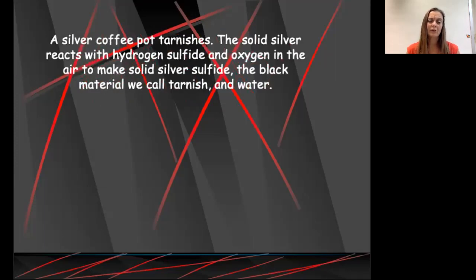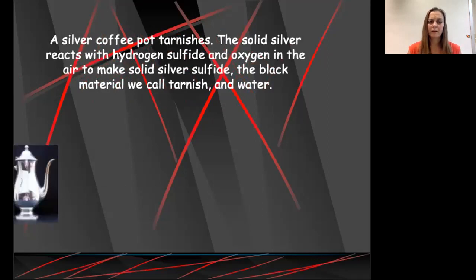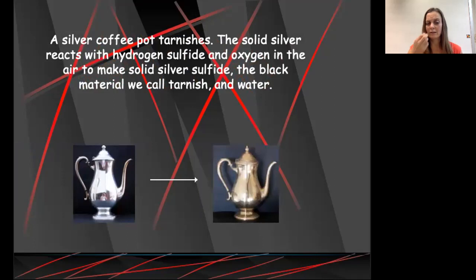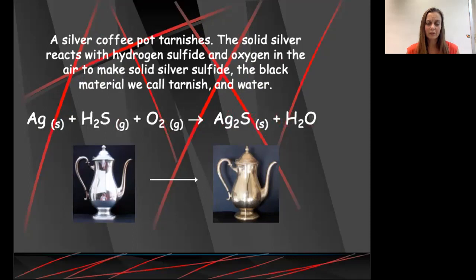One more example. Our silver coffee pot tarnishes. Solid silver reacts with hydrogen sulfide and oxygen in the air to make solid silver sulfide, the black material we call tarnish, and water. So here's our clean silver coffee pot tarnishing and giving us a tarnished silver coffee pot. We're going to start with solid silver. So we're going to have Ag and then (s) reacts with hydrogen sulfide in the air, so that's going to be H2S(g) because that's gaseous, it's in the air, and oxygen. Remember, oxygen is one of our diatomic molecules, so we're going to write that as O2 gas to form solid silver sulfide, so Ag2S because sulfide is a negative 2, silver is a positive 1, so we need two silvers to go with our sulfur, and water H2O. And that's what our skeleton equation is going to look like. Again, far from being balanced, but it's a skeleton equation, and that's okay.